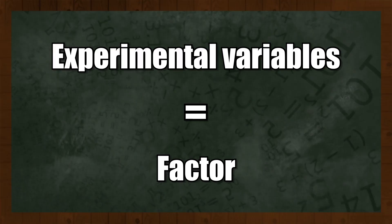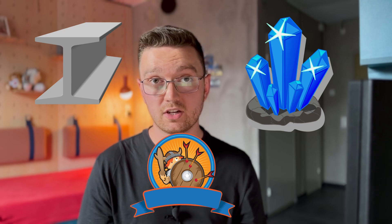Consider the process of creating an organic coating. The type of resin that's used, the curing temperature, as well as the curing time — these are all experimental variables that you can change to affect the characteristics of your final coating, such as hardness, gloss, or resistance to chemicals.